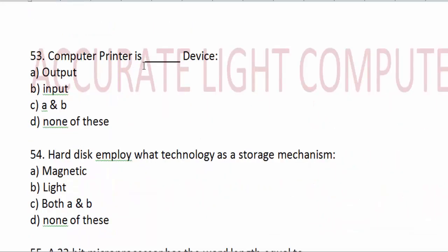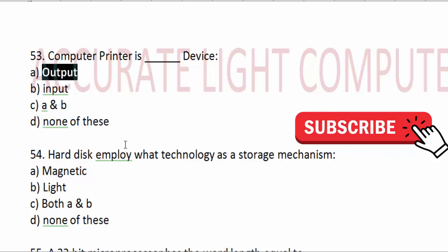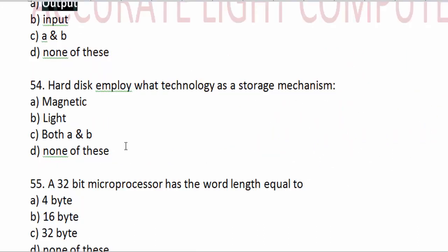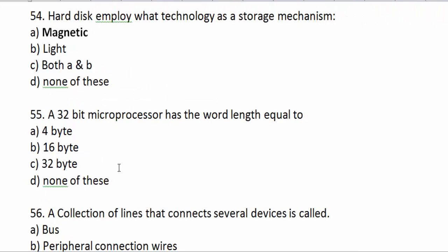A computer printer is an output device. Binary digits. 4 bytes equals one unit.